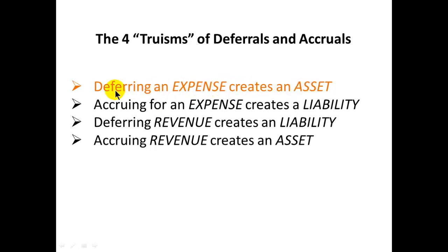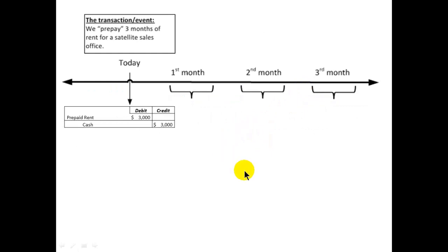We're deferring — putting off — the recognition of an expense, and the act of doing that is going to cause us to show an asset on our books. Here's an example: the transaction is that we prepay three months' worth of rent for a satellite sales office. The landlord says he'd like us to prepay three months. So we're going to give that landlord cash — we credit cash for three thousand dollars — but we debit three thousand dollars to an account called prepaid rent, which is an asset.